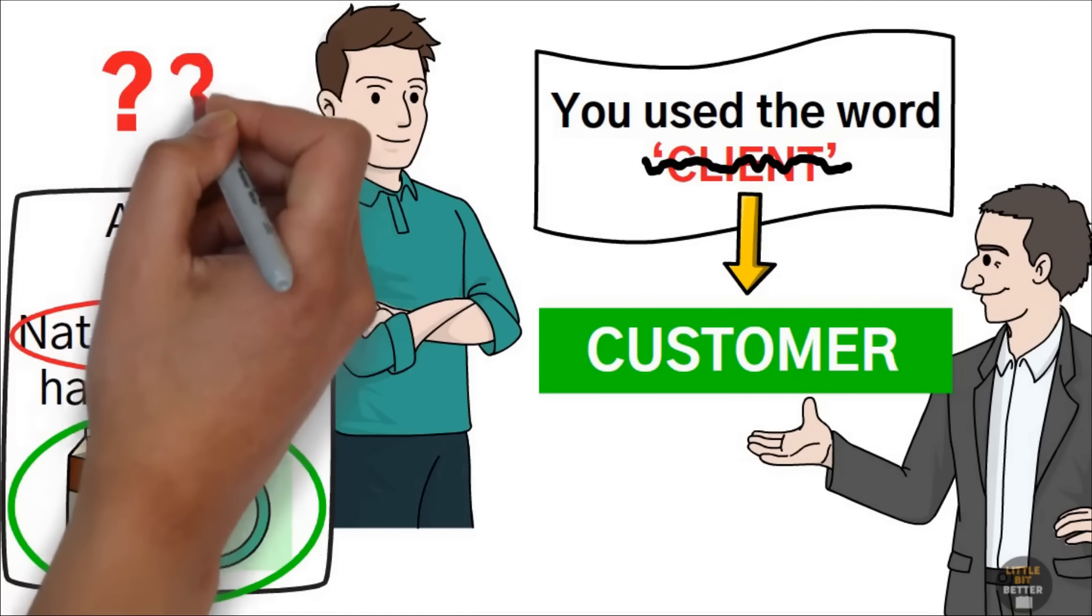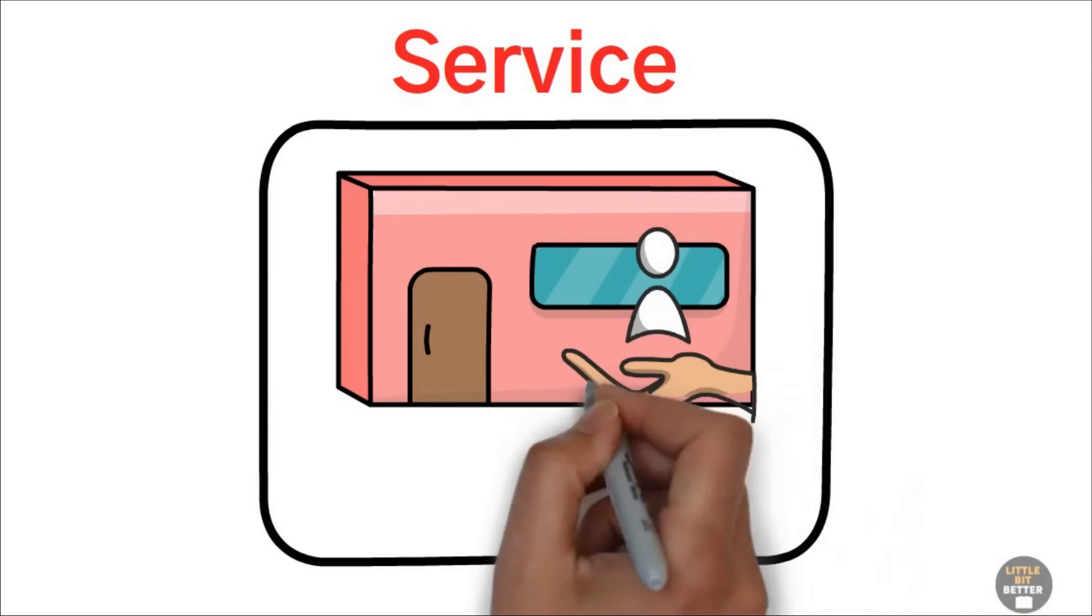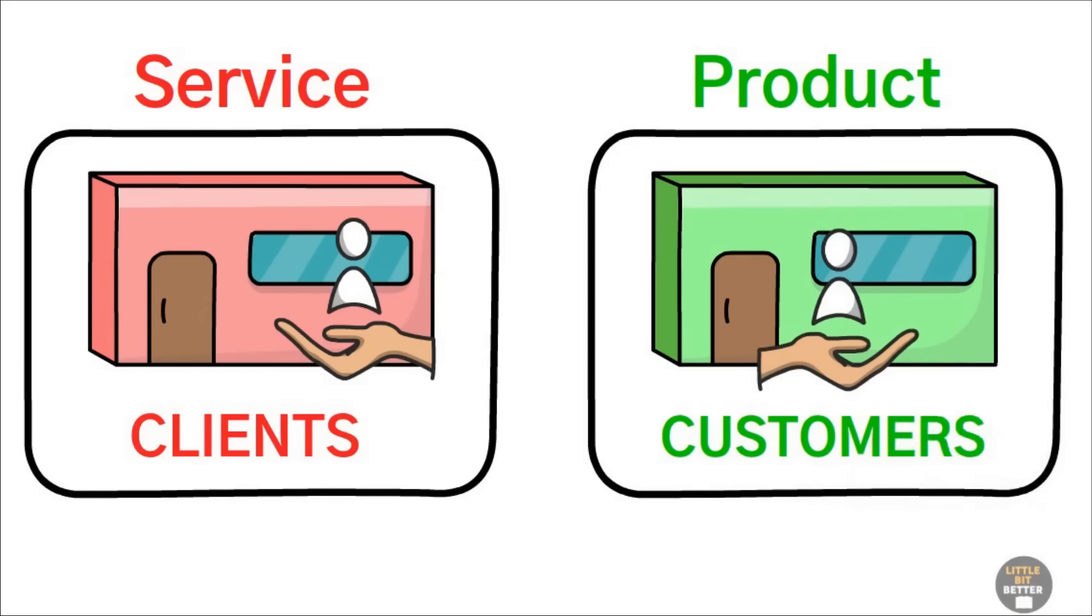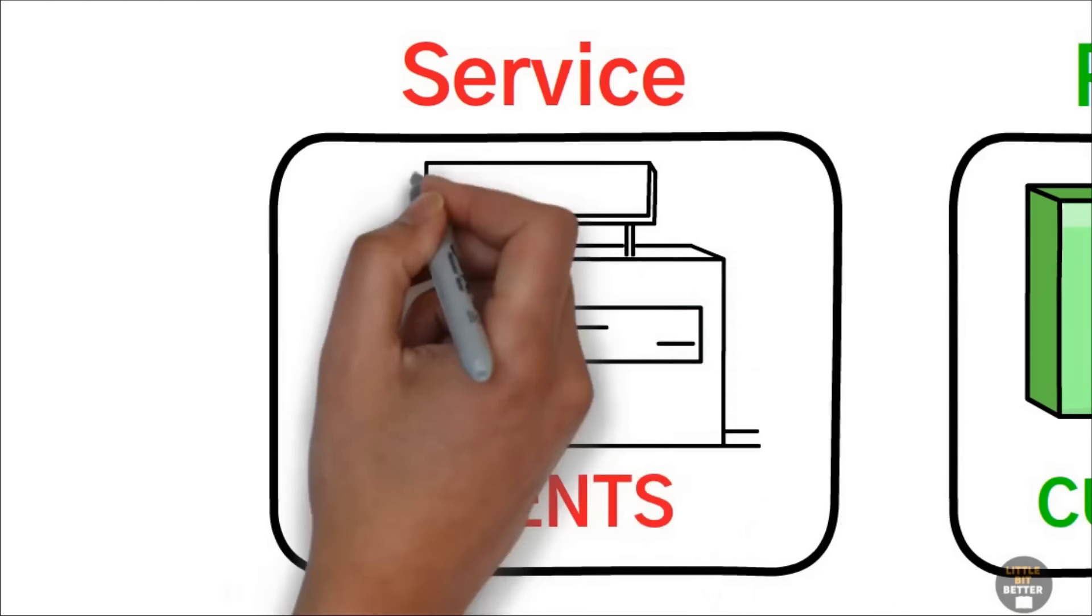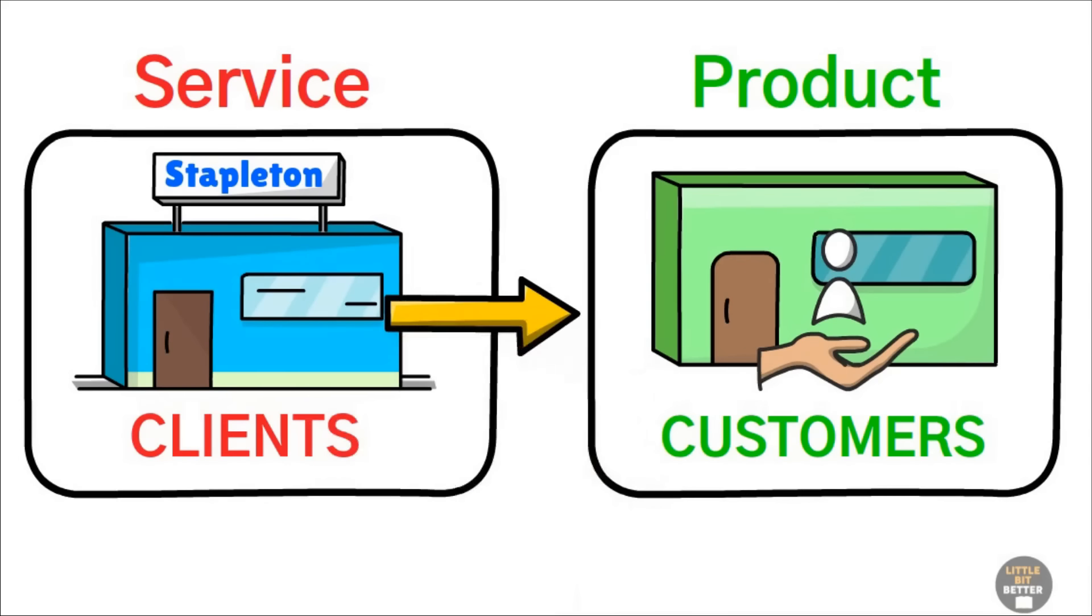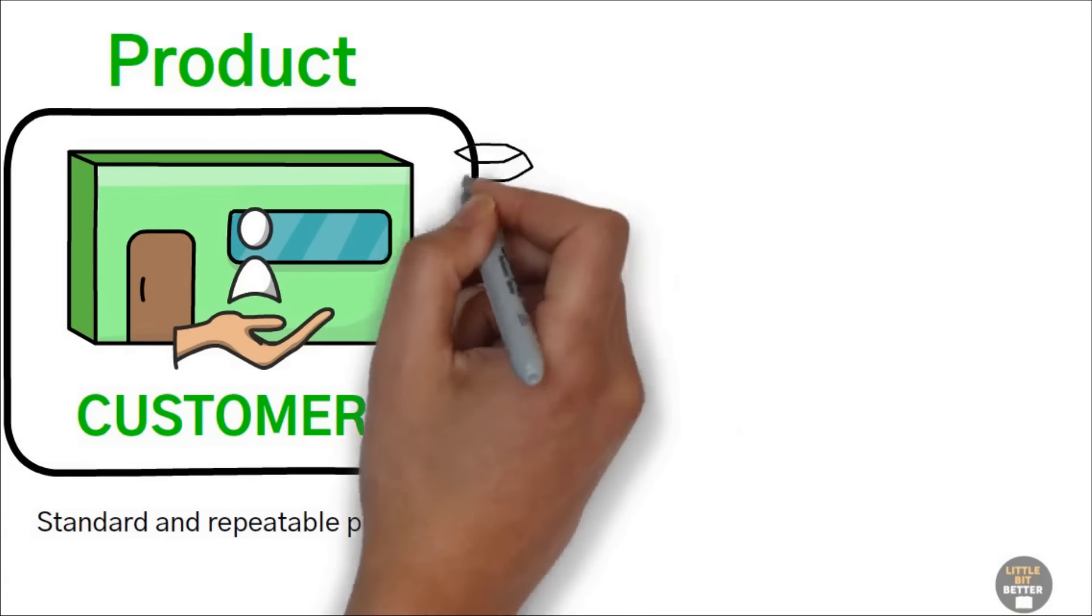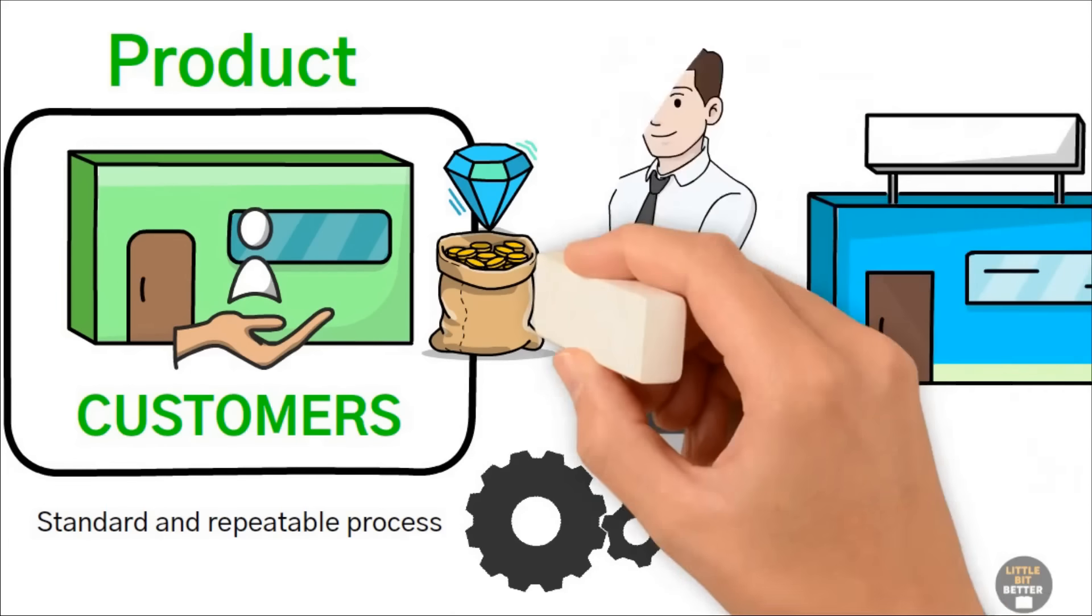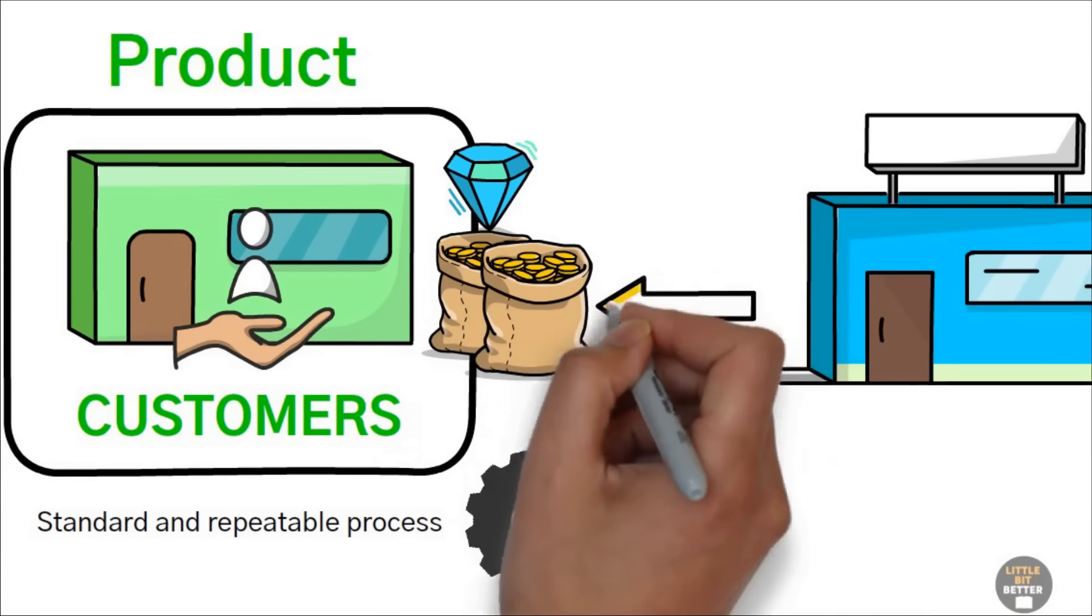Ted explained that service firms refer to their customers as clients and product businesses refer to them as customers. Using words like client signals that Stapleton Agency is a service business rather than a product business with a standard and repeatable process. A product business is more valuable and sellable. Buyers know processes are in place and the company can run without you. This will get you more money when you sell it.